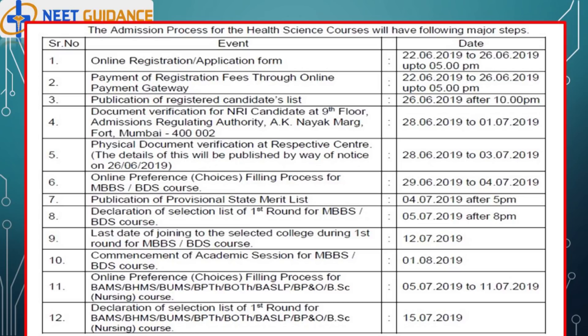Online preference choices filling process for BAMS, BHMS, BUMS, BPTH, BOTH, BASLP, BP&O, and BSC nursing: 5th July 2019 to 11th July 2019. Declaration of selection list of first round for BAMS, BHMS, BUMS, BPTH, BOTH, BASLP, BP&O, and BSC nursing: 15th July 2019.